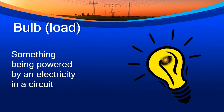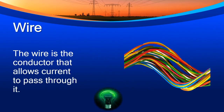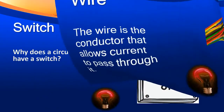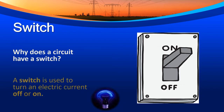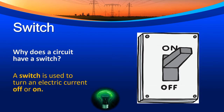Bulb: something being powered by electricity in a circuit. Wire: the wire is the conductor and allows current to pass through it. Switch: why does a circuit have a switch? A switch is used to turn an electric current off or on.